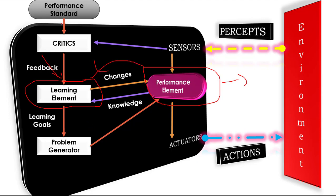The third component, the critic, decides how the agent is doing and determines how the performance element should be modified to do better in the future. The critic tells the learning element how well the agent is doing with respect to a fixed performance standard. The critic is necessary because the percepts themselves provide no indication of the agent's success.